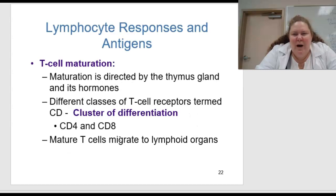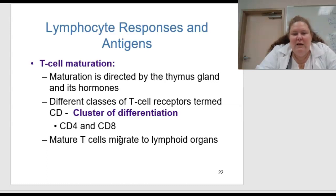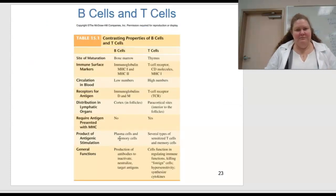T cell maturation is directed by the thymus gland and its hormones. The different classes of T cell receptors are termed CD, or cluster of differentiation — there's CD4 and CD8. These mature T cells then migrate into lymph organs.